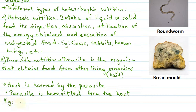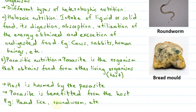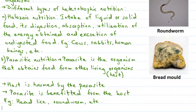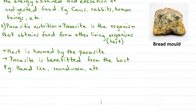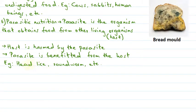Examples of parasites include head lice and roundworm. These are parasites that live on living hosts. Head lice can be found on our head and derives its nutrition from human beings. Roundworm can be found in our intestine and causes severe infections. So the host is getting harmed while the parasite is getting benefited from the host.